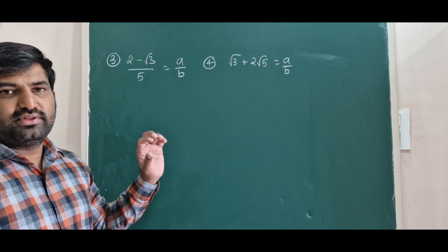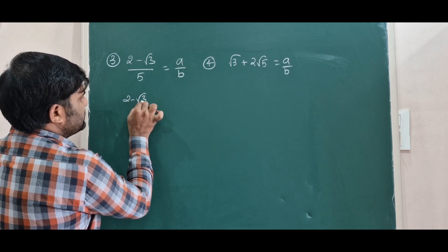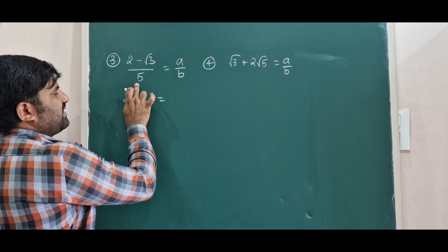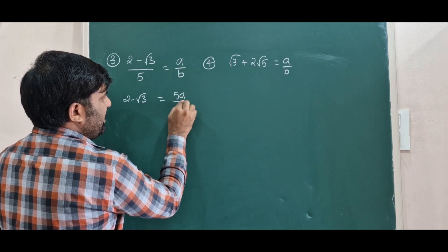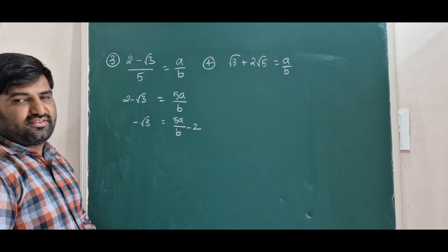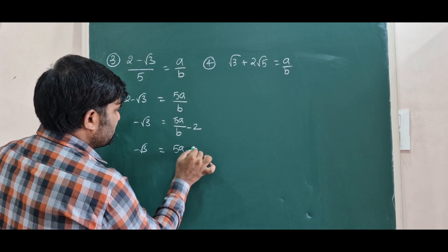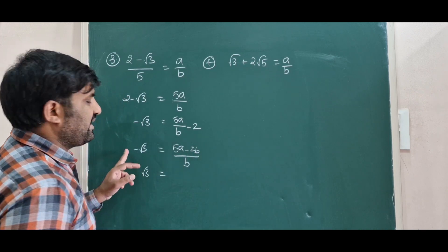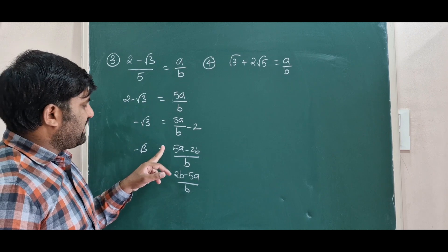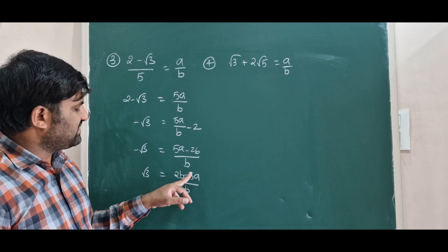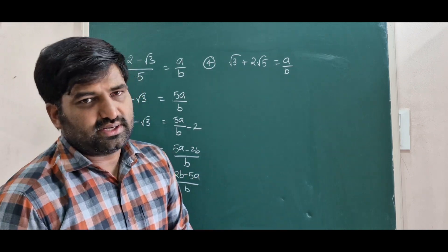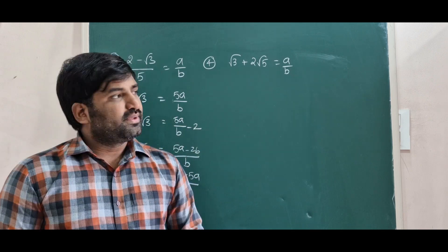For the third question, 2 minus root 3 by 5 — this is a board question. Since 5 is in the denominator, transposing to the right-hand side gives 5 times a by b. Rearranging: minus root 3 equals 5a by b minus 2, which is 5a minus 2b by b. Multiplying both sides by minus 1: root 3 equals 2b minus 5a by b. Since 2b minus 5a and b are integers, root 3 is in the form p by q, contradicting that root 3 is irrational.